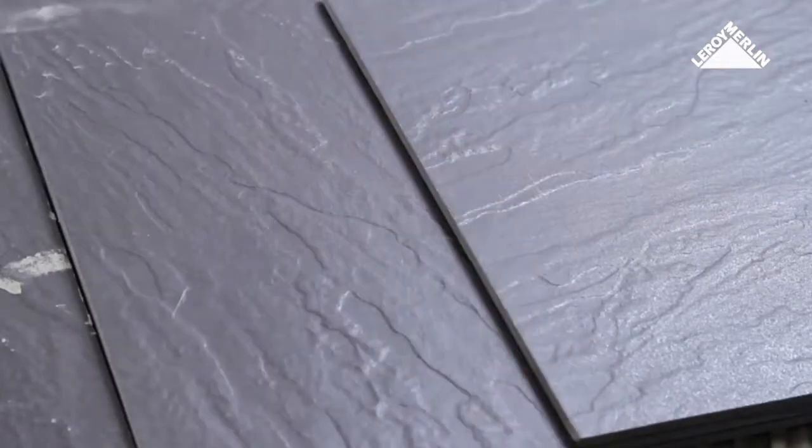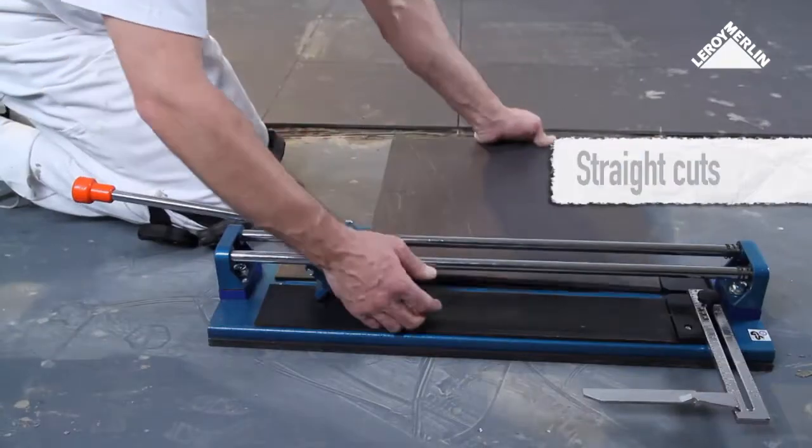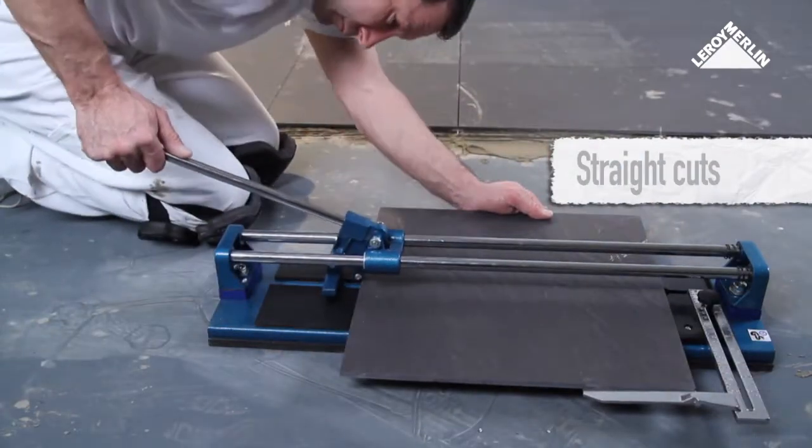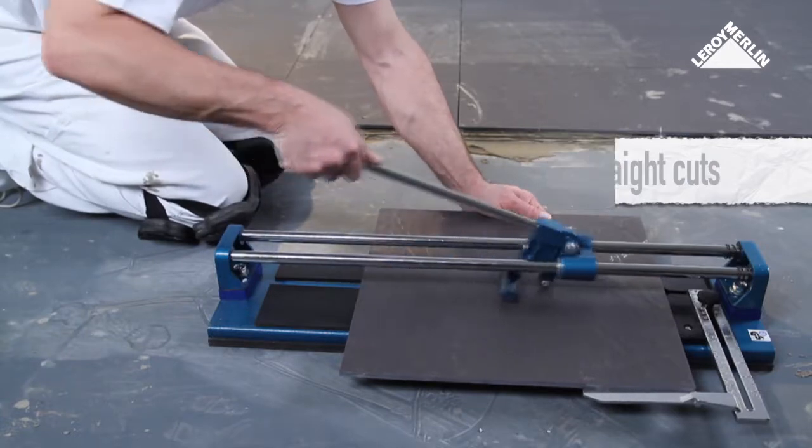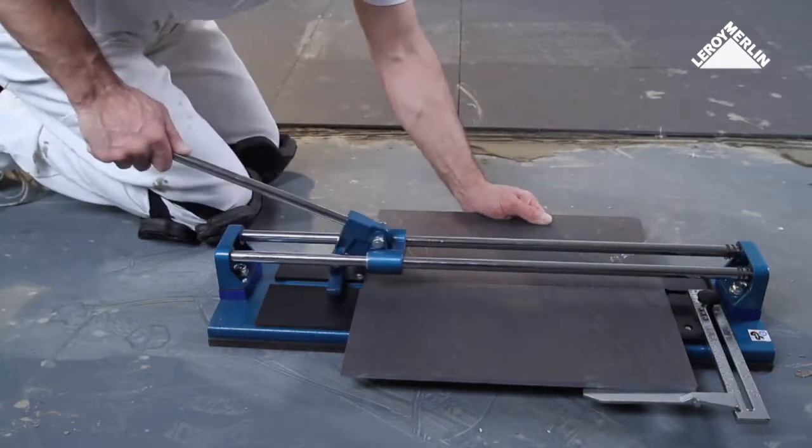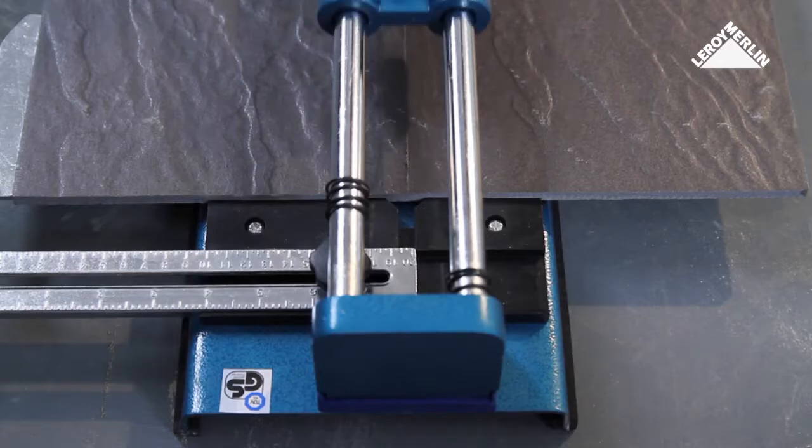Place your tile on the tile cutter so that the line you drew lies exactly under its cutting wheel. Place the lever at the upper side of the tile and push, holding it down evenly until you reach the end of the tile.